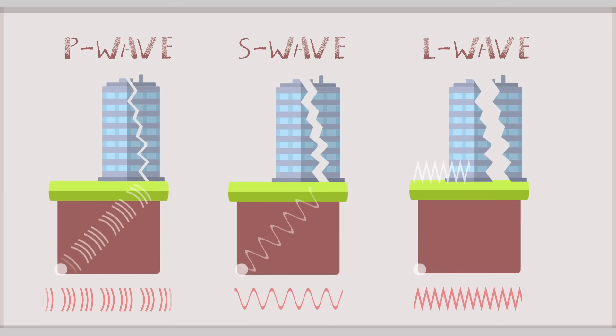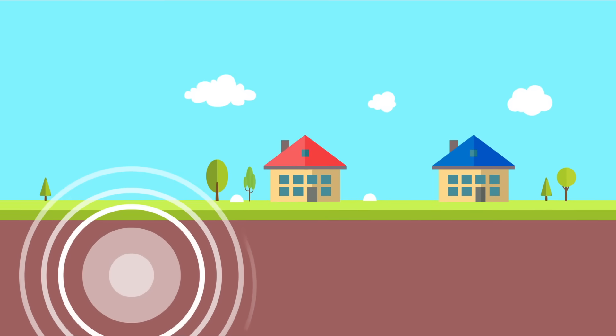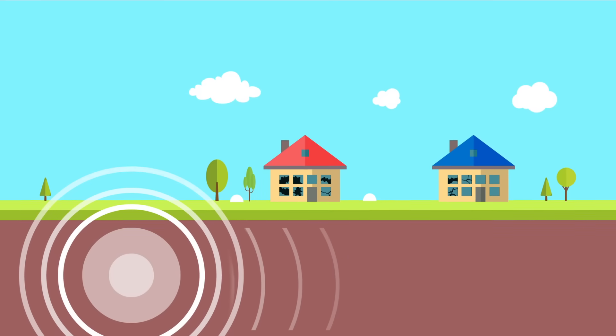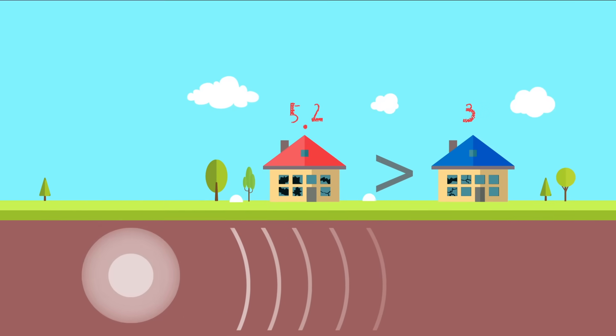Given the same underground conditions, amplitude and damage increase together. There has just been an earthquake. The red house is closer to the epicenter than the blue house. As a result, more windows in the red house were shattered. In other words, the seismic intensity of the earthquake was greater at the red house.